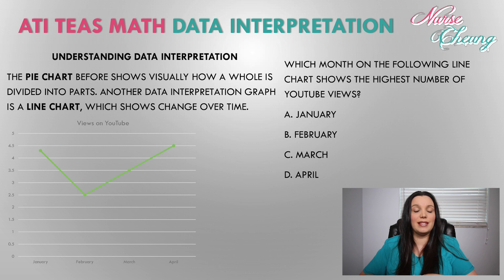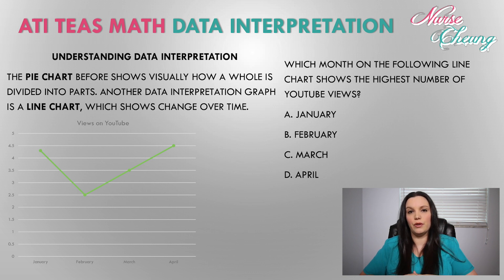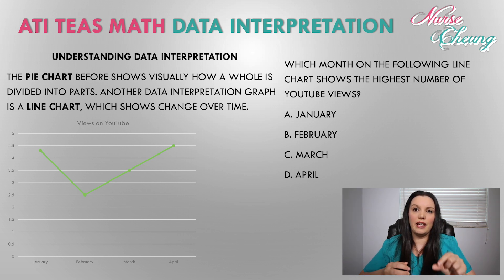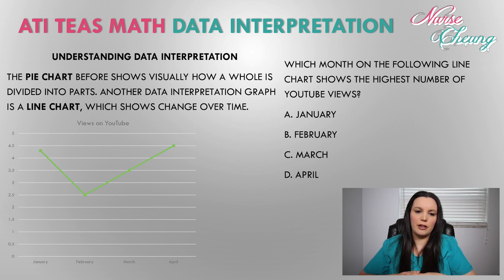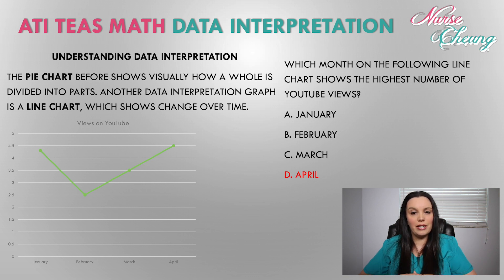Another data interpretation graph is a line graph, which shows changes over time. For which month does the following line chart show the highest number of YouTube views? Options: A) January, B) February, C) March, or D) April. Looking at the line chart, January had about 4.3 views, February had 2.5, March had 3.5, and April had 4.5. When you put all that data together, the highest number of YouTube views was in April. The correct answer is D, April.